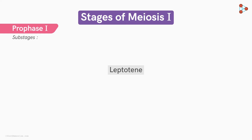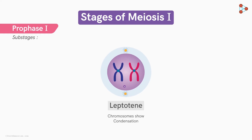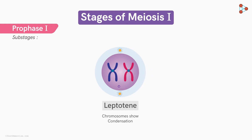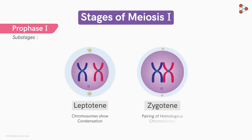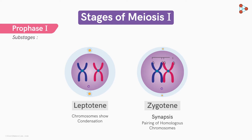Leptotene is the first substage. Here, the cell begins condensation of the chromatin, making it short and compact. The next substage is zygotene, where homologous chromosomes form a pair called the synapsis. The new structure formed after the union of two homologous chromosomes is called a tetrad or a bivalent.